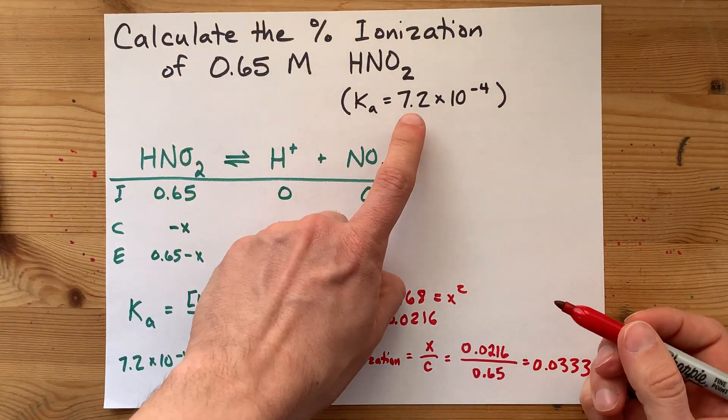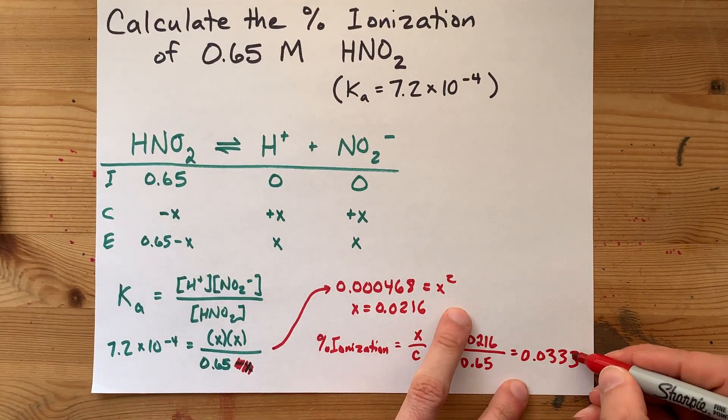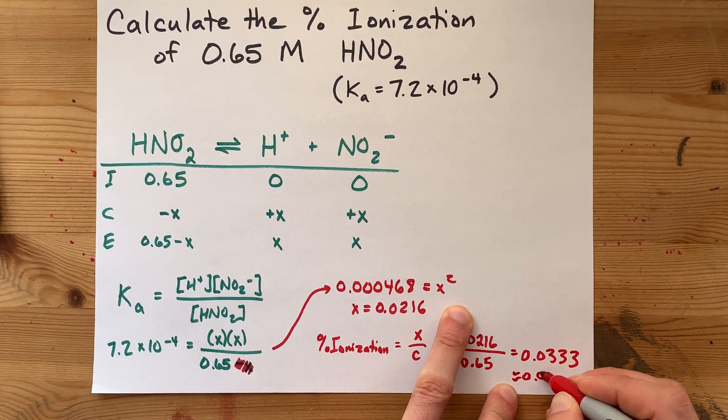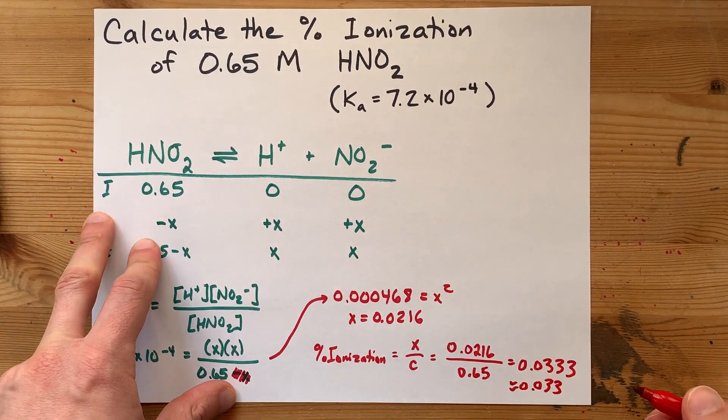Now, I'm just going to be careful here. Two significant figures, two significant figures. So, I guess that that's about 0.033. I'm just going to round it to two significant figures there. And so, the official answer here is 3.3%. About 3% of the HNO2 that we dissolve in water...